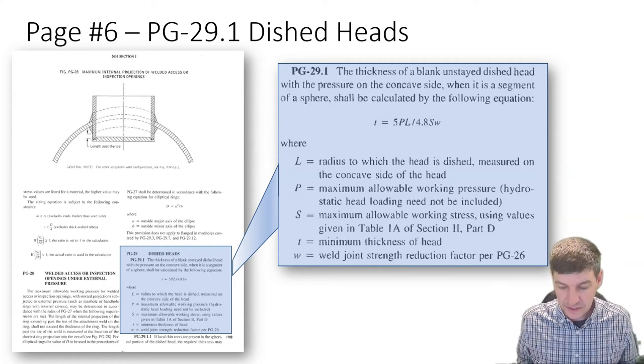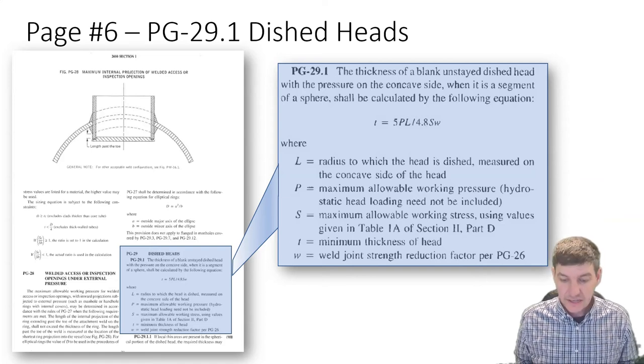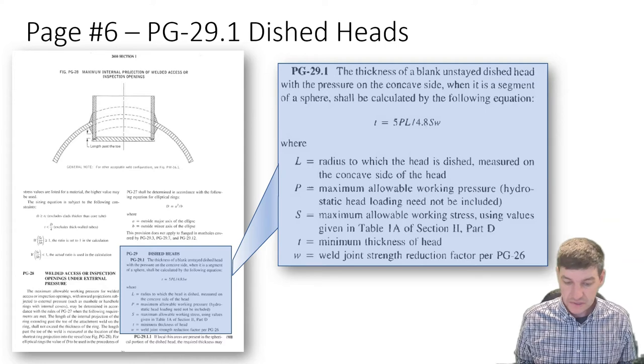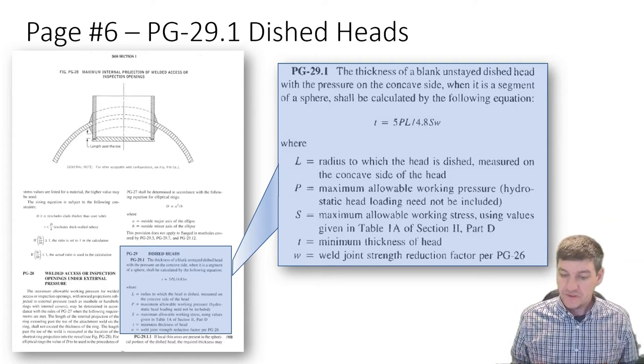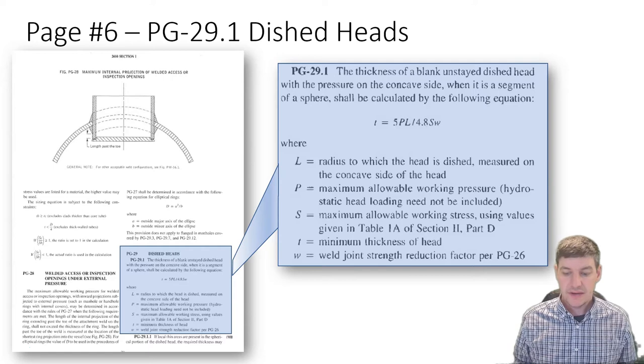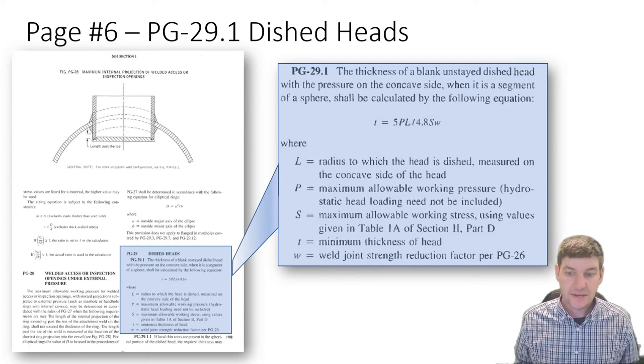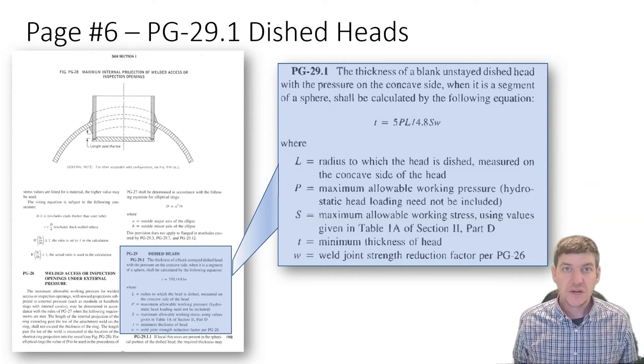We have an equation and this equation looks pretty easy. The thickness T equals 5PL divided by 4.8SW - pressure times L which is a radius, divided by 4.8 times S, the maximum stress from our tables, and W, that weld joint strength reduction factor from table 26. We have a fairly easy equation.